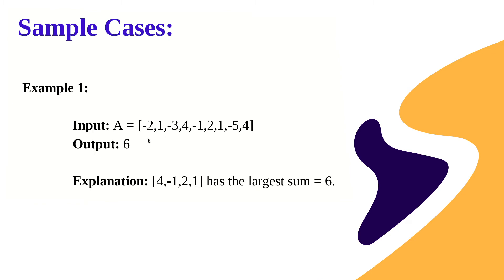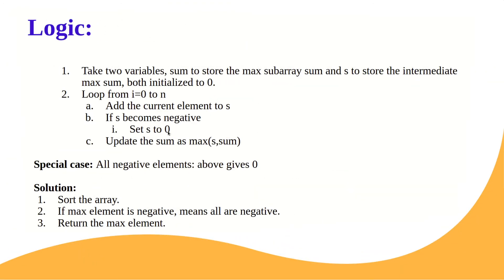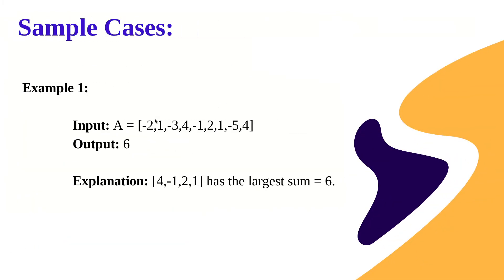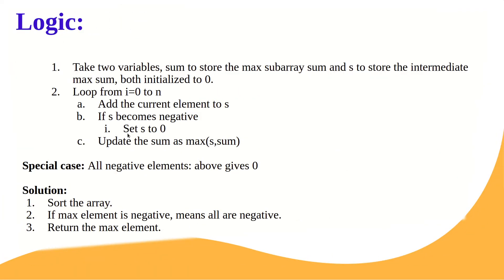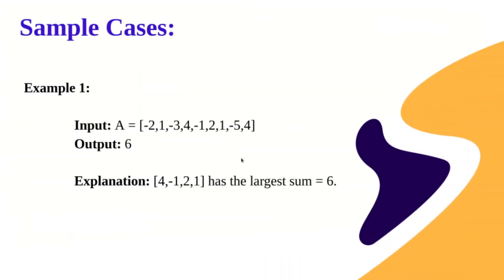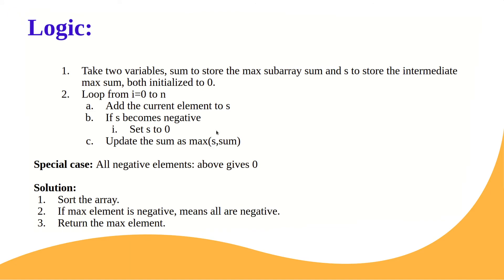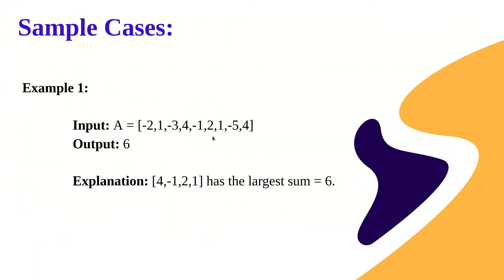Let's do a dry run. s becomes one, then one minus three gives minus two, so s is set to zero and sum becomes one. Then we come to four, so s becomes zero plus four which is four, and sum updates to max of one and four, which is four. We add minus one so s is still positive, sum stays four. Then we add two then one, so ultimately it becomes three plus two plus one which is six, and that's why we return six.